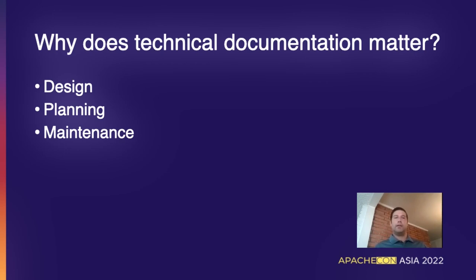Why does technical documentation matter? Why does art matter in technical or engineering writing? Art matters in engineering because in the engineering and design process, you have to start with some kind of sketch or base framework before you start engineering, designing, and building any technology or software. Components of the whole document or product being built are inspired through artistic expression, and even the absence of art from a design or engineering document is a form of expression in and of itself.